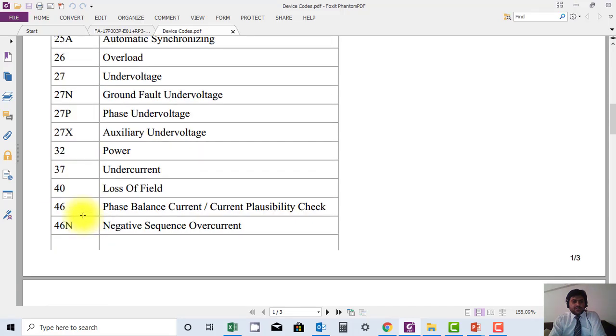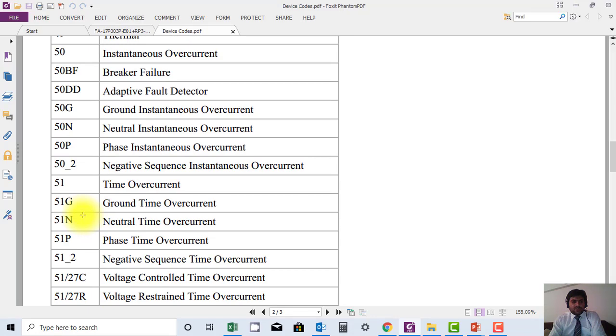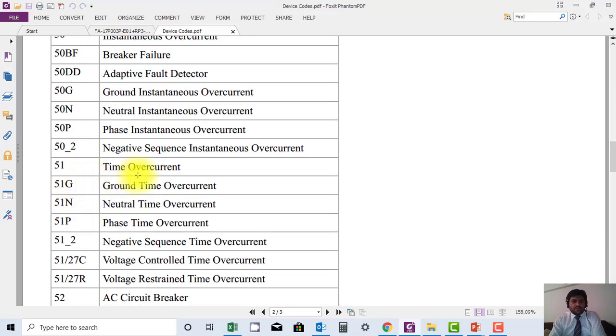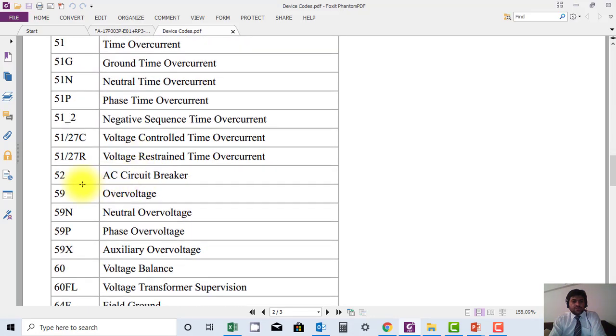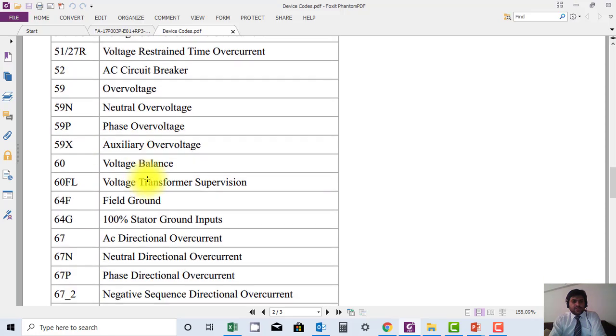Similarly, you can find these codes. Code 51 is for time over current. Code 52 is for AC circuit breaker, as I have mentioned already.